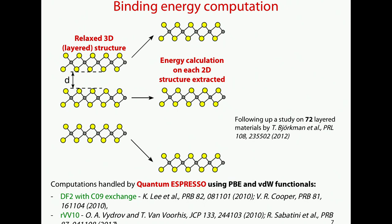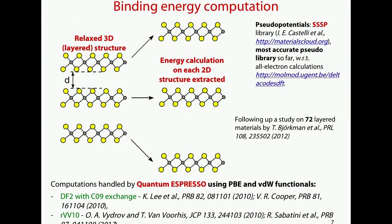I doubt it would change significantly the results. The other ingredient you also need are good pseudopotentials. Here I would like to mention another work we did in the lab, which is to compile a library of pseudopotentials. We collected all the possible pseudopotential libraries, testing them against all-electron calculations and testing convergence until we get for each element the best pseudopotential. This is the SSSP, which is available on the web and is highly reliable.